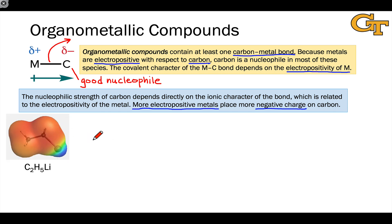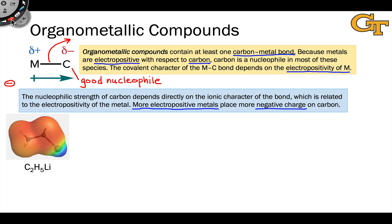Let's look now at some electron density maps that show the arrangement of electrons within different types of organometallic compounds. Just as a quick refresher, keep in mind that on these maps where we see red or orange color, these are areas of large negative charge or high electron density, and where we see blue or deep green color, these are areas of positive charge.